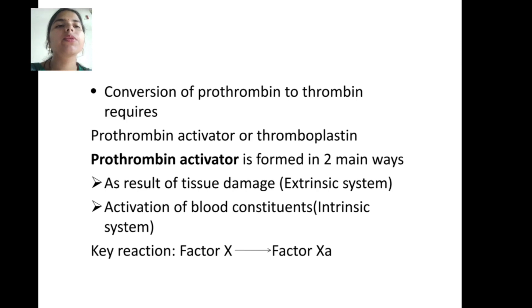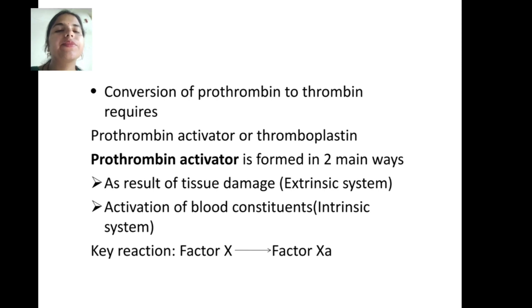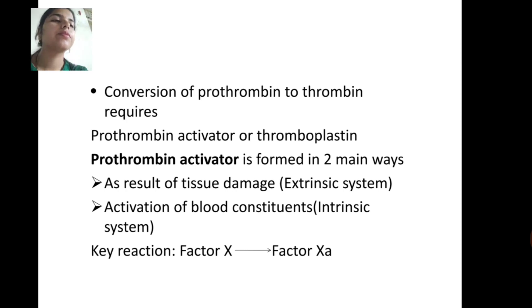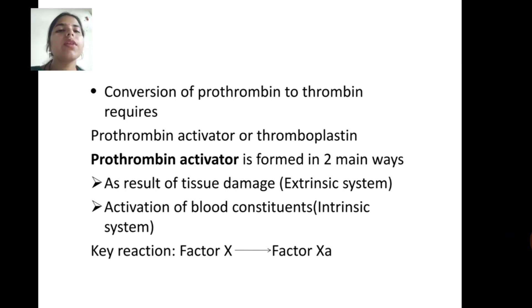Conversion of prothrombin to thrombin requires the prothrombin activator, also known as thromboplastin. The prothrombin activator is formed in two main ways as a result of tissue damage — the first being the extrinsic system.